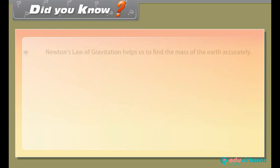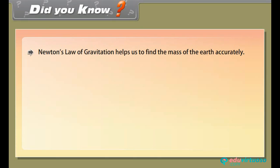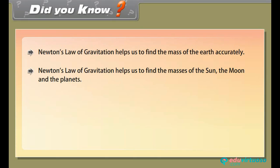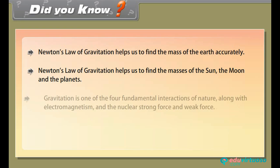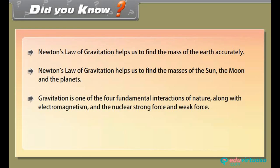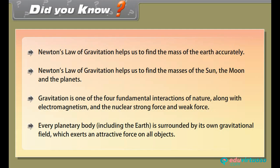Did you know: Newton's law of gravitation helps us find the mass of the earth accurately, as well as the masses of the sun, the moon and the planets. Gravitation is one of the four fundamental interactions of nature, along with electromagnetism, the strong nuclear force and the weak force. Every planetary body including the earth is surrounded by its own gravitational field, which exerts an attractive force on all objects.